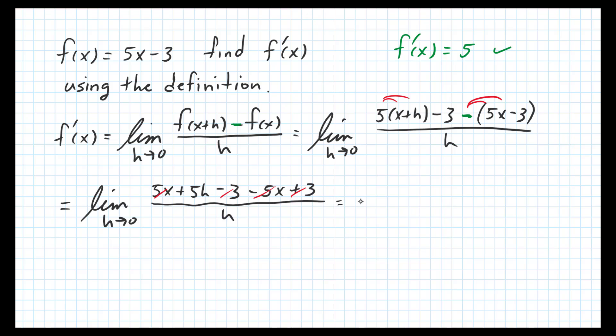So what's left is 5h over h, and then we can divide out the h's and we get the limit as h goes to 0 of 5.